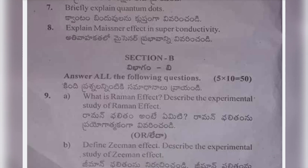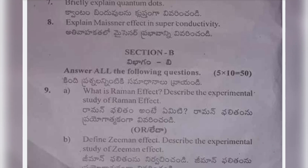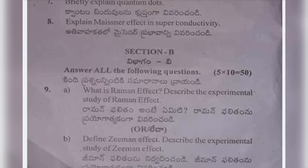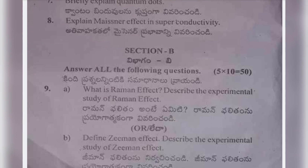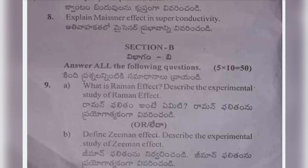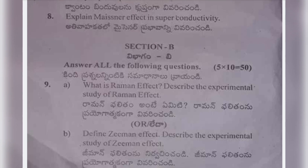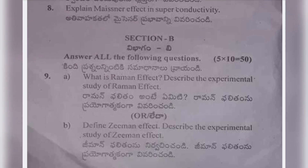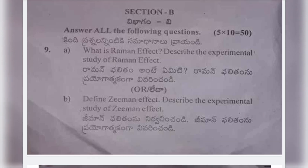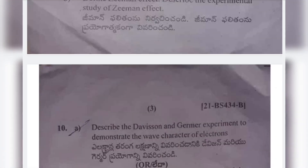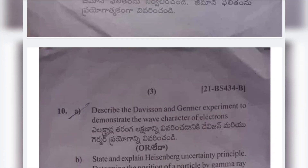Ninth (b): Define the Zeeman effect and describe the experimental study of the Zeeman effect. Both of these are important — either one or both could appear. Tenth (a): Describe the Davisson and Germer experiment to demonstrate the wave character of electrons.